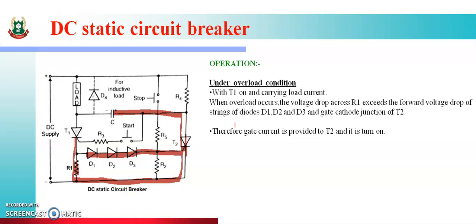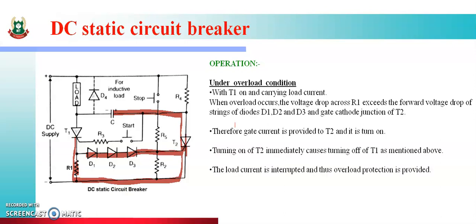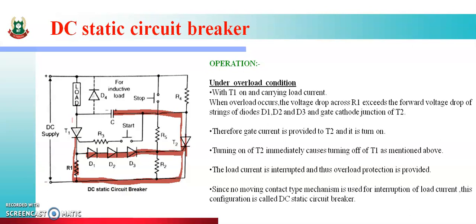Therefore, gate current is provided to T2 and it turns on। T2 on होते ही T1 off हो जाएगा, और T1 off होने के कारण load current interrupt हो जाएगा। Since no moving contact type mechanism is used for interruption of load current, this configuration is called a DC static circuit breaker — all are static components, all are static mechanisms.